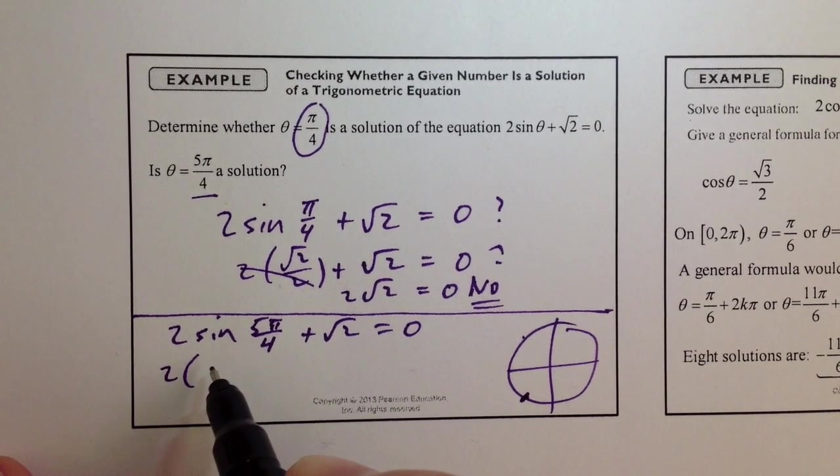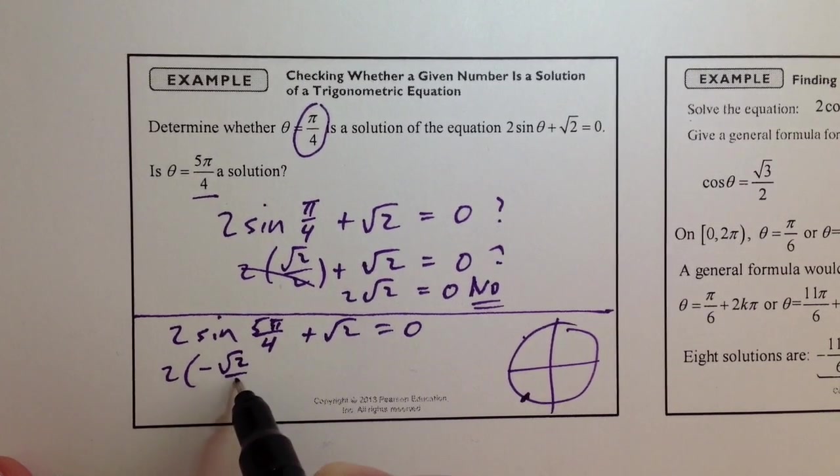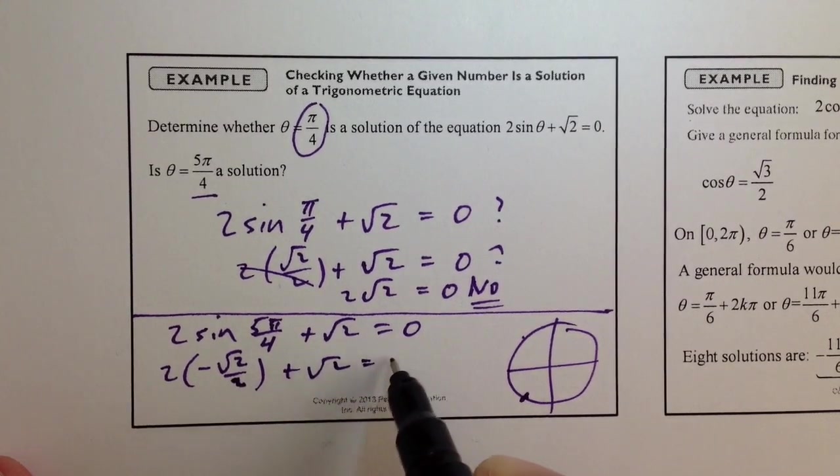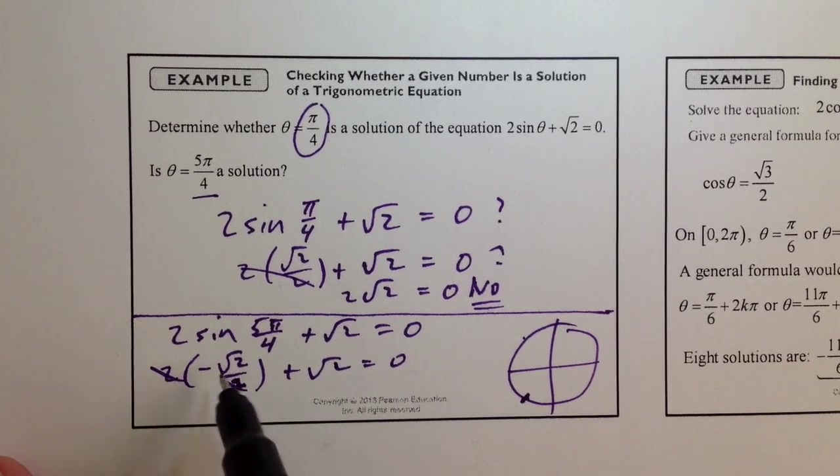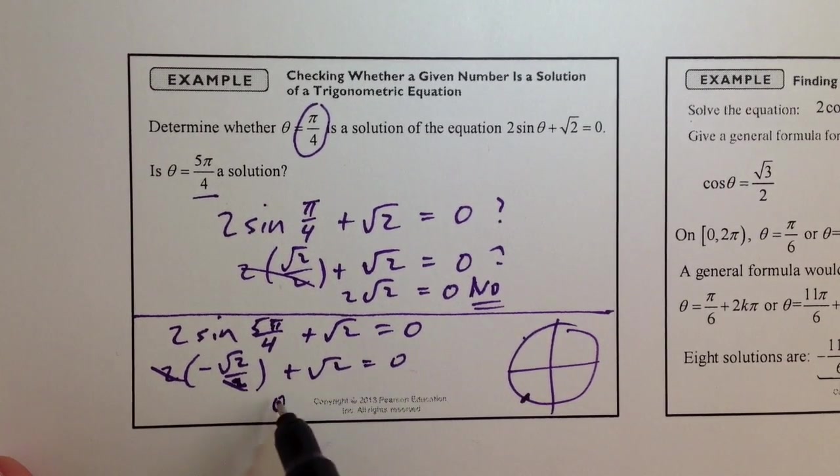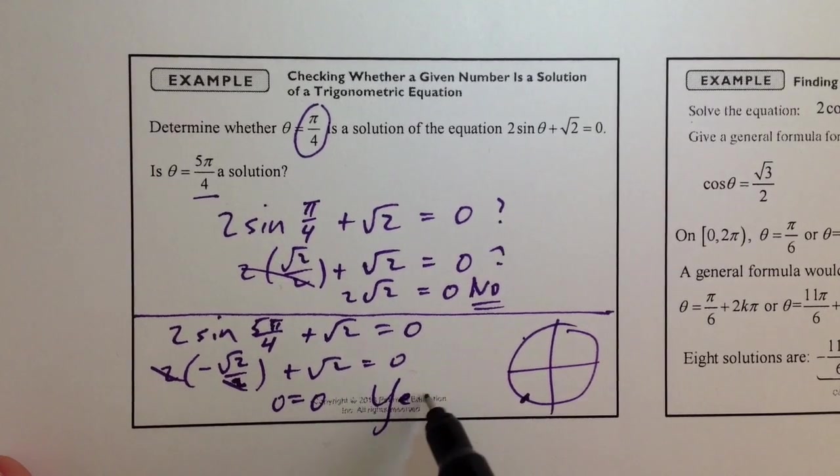So we substitute negative radical 2 over 2 for the sine of 5 pi over 4. And it looks like this will work. When we cancel the 2s, we get negative radical 2 plus positive radical 2, and that is 0 equals 0. So that would be a yes.